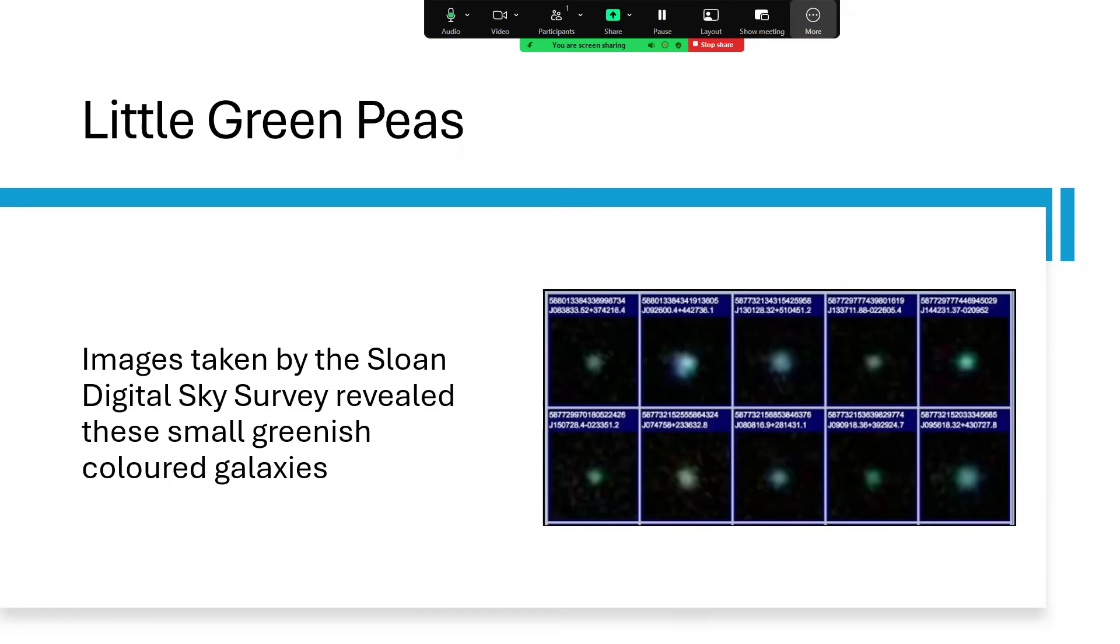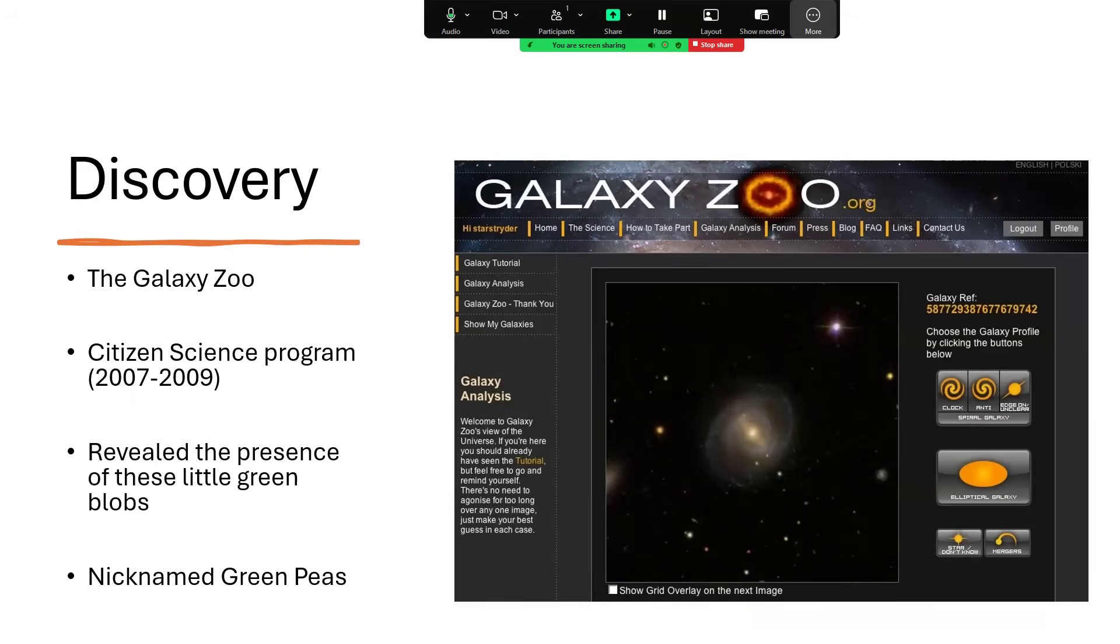That real discovery is attributed to the citizen science program Galaxy Zoo. Galaxy Zoo was a program set up to show millions of images of galaxies and ask individual people via the internet to comment upon them, to classify them.